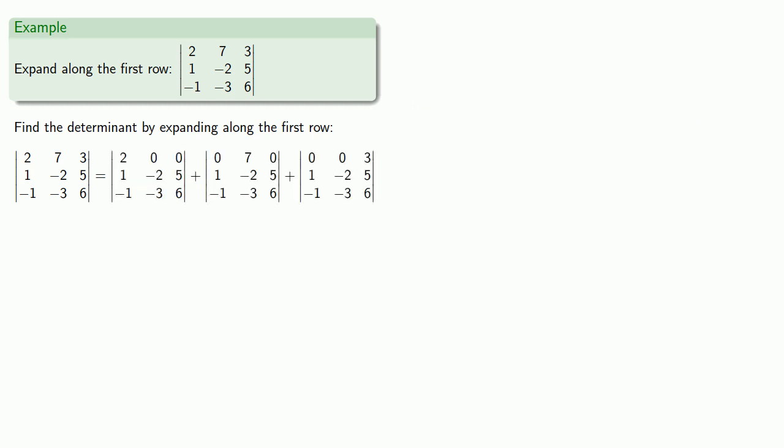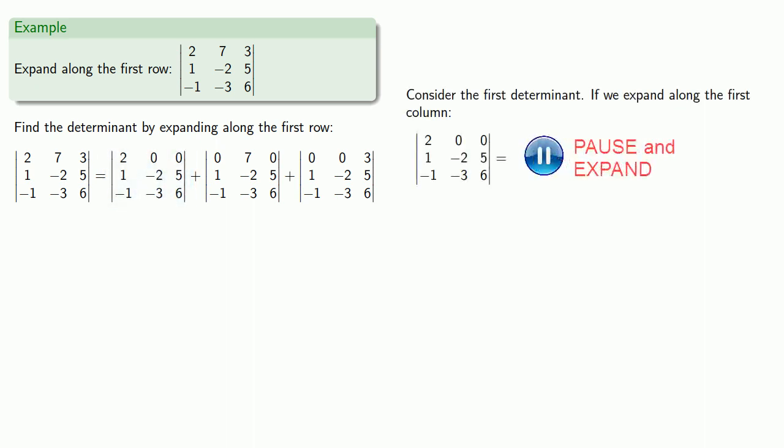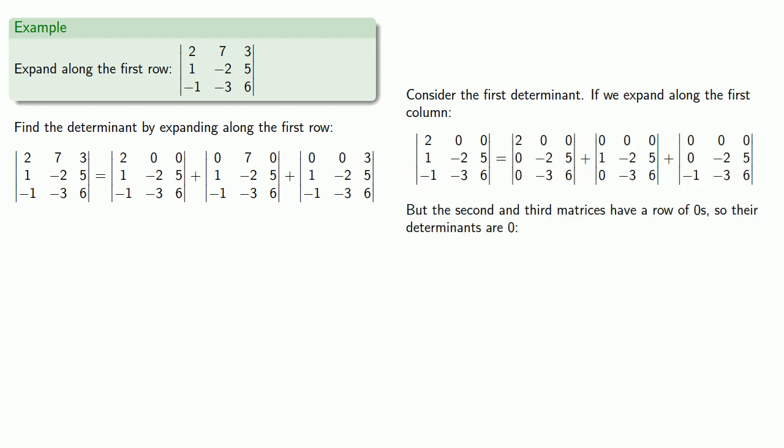Now let's take a look at that first determinant. If we expand along our first column, this will be... But notice, the second and third matrices have a row of zeros, so the determinants are zero, and so the only thing left is this first matrix.